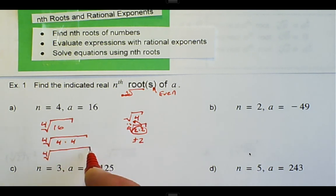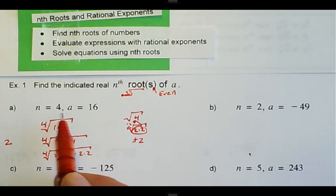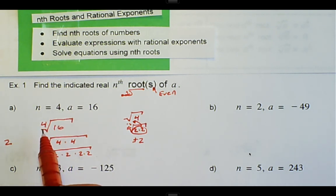And then we also know that we can break this down further as 2 times 2 for that first 4, and then 2 times 2. So now we have four 2s under the radical with a fourth root, so we know that we can take a 2 out. And because it's an even root on the radical, we have to account for plus or minus.